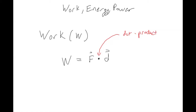A dot product is a special kind of multiplication that you use between two vectors. It can get more complicated, but for this class we're just going to say that this dot product means you take the magnitude of each of these vectors.